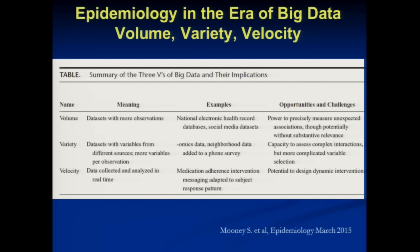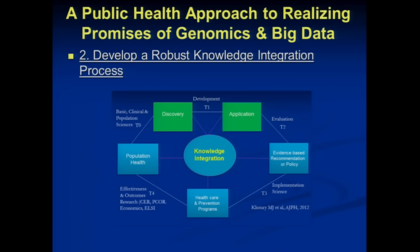One of the things happening in the world of epidemiology is that big data — in terms of volume, variety, and velocity — is going to give us many more data points. This paper from Steve Mooney published earlier this year found that most of the promise will be in that velocity, where we can collect data in real time, look at adherence to interventions, and design more dynamic interventions — big data in terms of omics, neighborhood, et cetera.